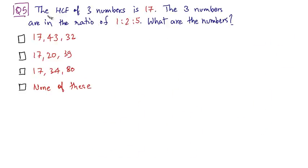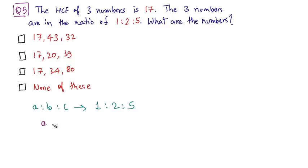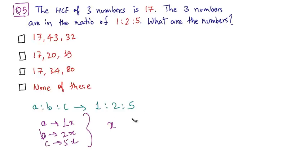Let's move on to question number 5. The HCF of three numbers is 17. The three numbers are in the ratio 1:2:5. What could be the numbers? We have been given the ratio of the numbers. Let's consider the numbers as A, B, and C. So A:B:C is given as 1:2:5. As the ratio is given, we can say that A is 1x, B is 2x, and C is 5x. The common factor amongst these three numbers is x, and it is the only common factor.